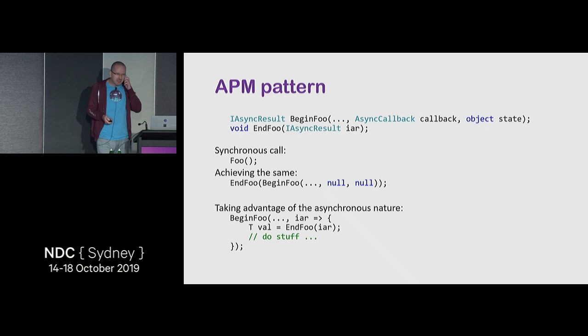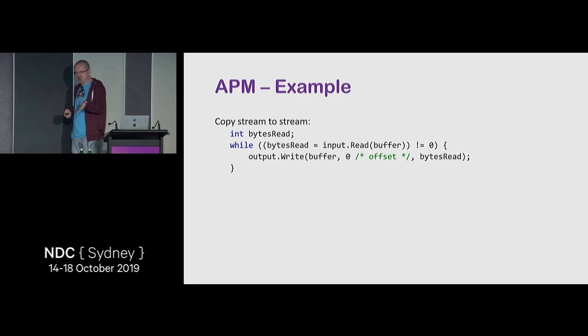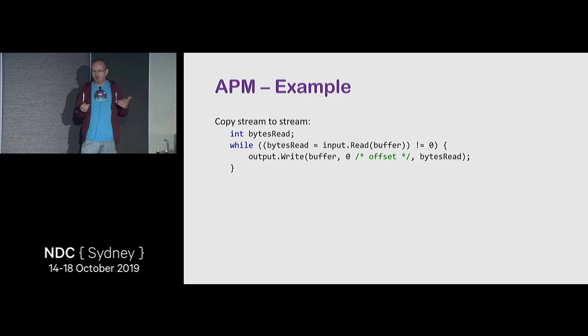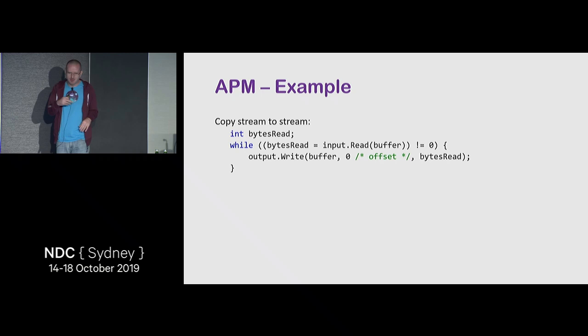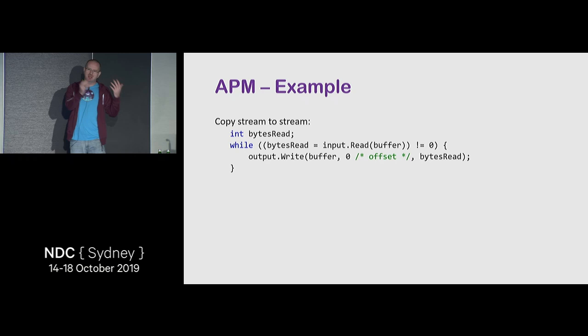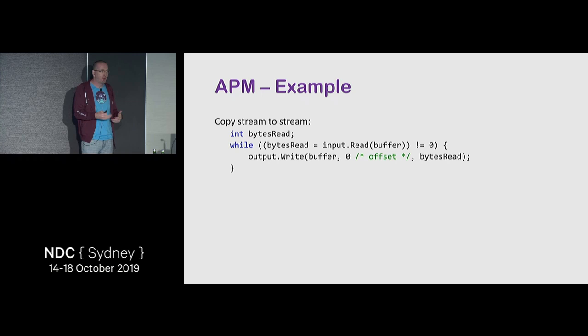Imagine copying a stream to a stream. The synchronous version: you read from input into a buffer, get bytes read — zero means done — and write it somewhere else. For example, reading from disk and sending to network, or reading from network and saving to disk or memory.